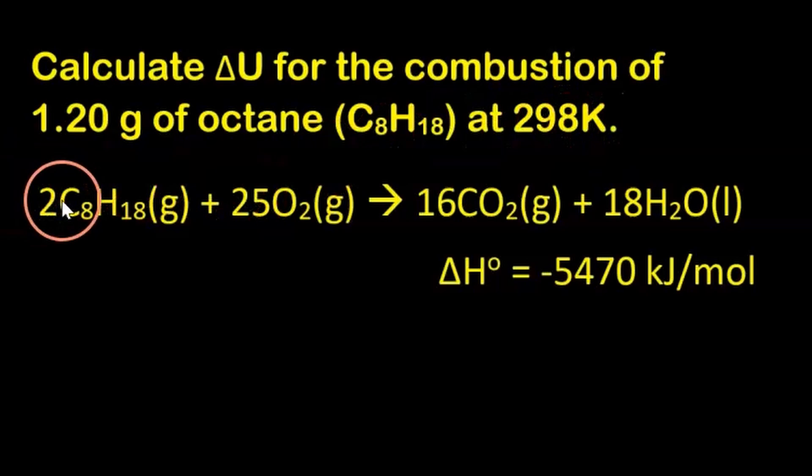We're given a balanced chemical equation, and we have the enthalpy change for the reaction. This is the standard enthalpy change, or the enthalpy change of combustion, the heat of combustion for this reaction. Under one bar it's negative 5,470 kilojoules per mole. We want the change in internal energy, so we're going to use the same equation like we did before.